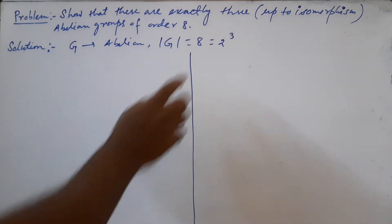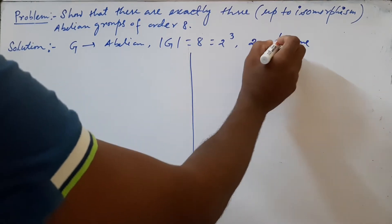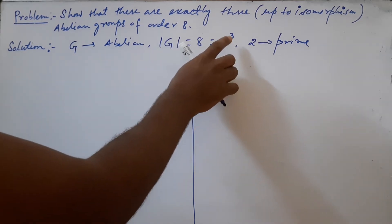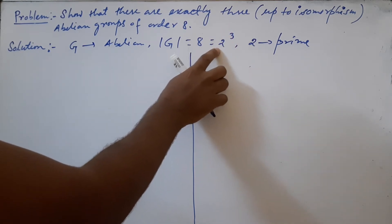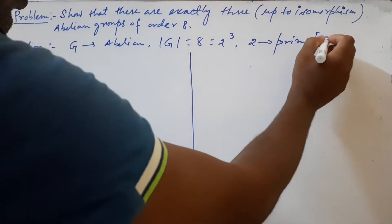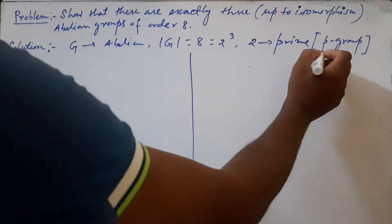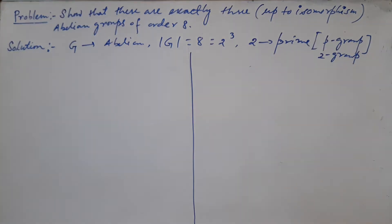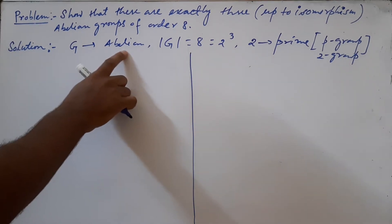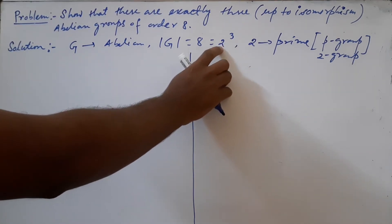Now, 8 can be written as 2³ and 2 is a prime. So G is of order 2³, that is, a positive integral power of a prime p, where p is 2. So G is a p-group, that means G is a 2-group.